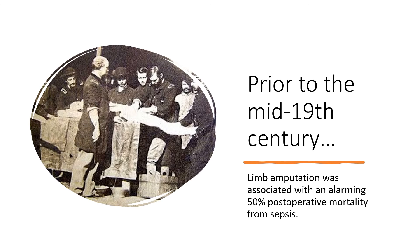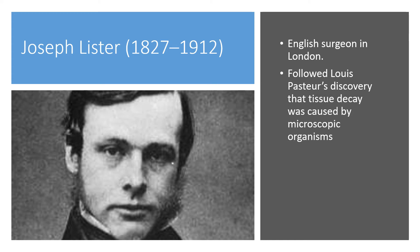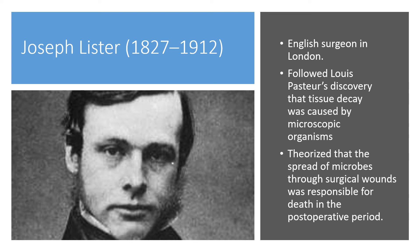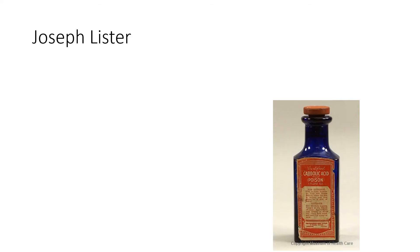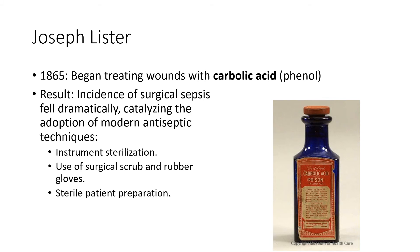Despite knowledge that alcohol could sterilize wounds, prior to the mid-19th century limb amputation was associated with an alarming 50% post-operative mortality from sepsis. Then Joseph Lister, an English surgeon, followed Louis Pasteur's discovery that tissue decay was caused by microscopic organisms. He theorized that the spread of microbes through surgical wounds was responsible for the high post-operative death rate. In 1865, he began treating wounds with carbolic acid, and the incidence of surgical sepsis fell dramatically, catalyzing the adoption of modern antiseptic techniques including instrument sterilization, surgical scrub, rubber gloves, and sterile patient preparation.